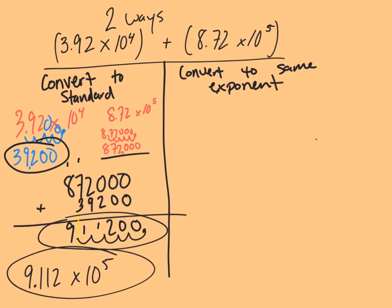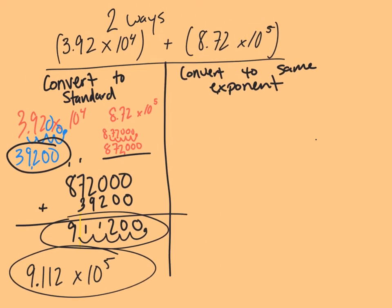Here we're going to convert to the same exponent, then just add the bases together, and by the time we're done, we're going to have the same exponent anyway. I'm going to prefer to write both of them as 10 to the fifth. You can decide which one you're going to convert to, but I'm going to convert this number to 10 to the fifth.